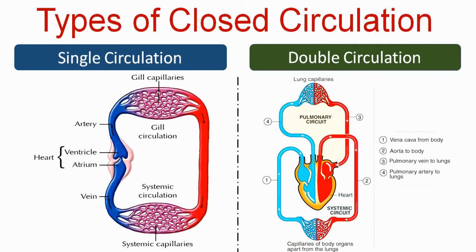In double circulation, deoxygenated blood is carried by the pulmonary artery towards the lungs for oxygenation. The heart is four-chambered, with the right side carrying deoxygenated blood and the left side carrying oxygenated blood. There are two circuits: the pulmonary circuit and the systemic circuit.